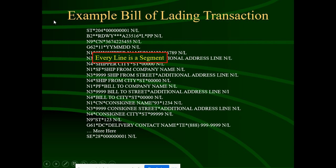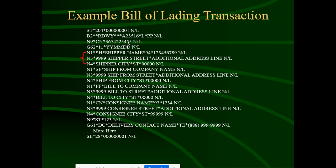As you know, segments include ISA, ST, B2, N1, N2, G6, SE, and all information included within a segment. When segments are grouped together, that is called a composite element. If an interviewer asks what a composite element is, the answer is: elements that contain more than two sub-elements, or information gathered together in a group.